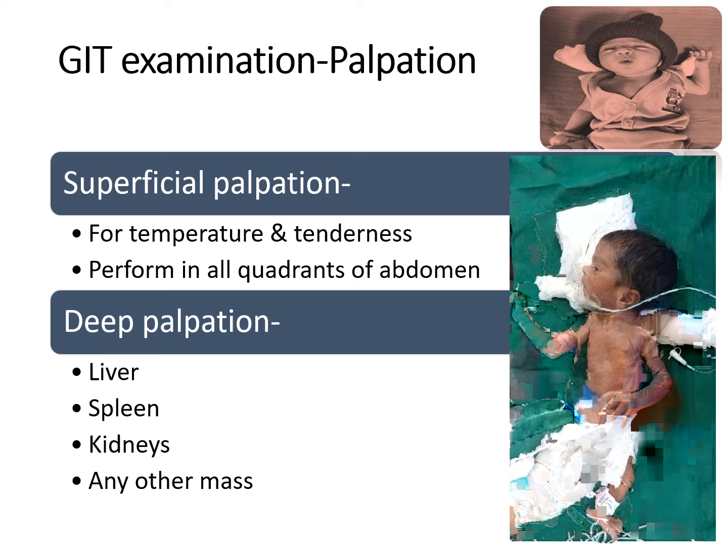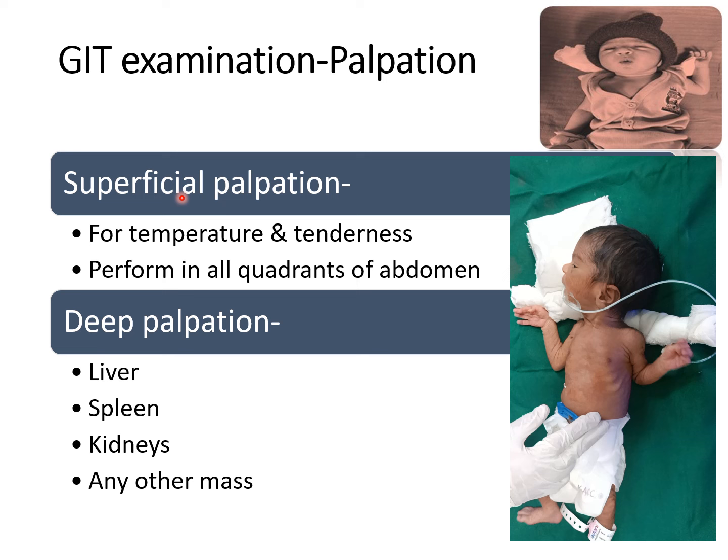After inspection, palpation should be performed — first superficial palpation then deep. In superficial palpation, we should palpate all 9 regions of the abdomen. We should check the temperature with the dorsum of the hand, and for tenderness we should look at the face of the baby. If the baby is crying or changing any facial expression, that means the baby may be having tenderness. We have to mention in which particular quadrant or region of the abdomen the baby is showing a change in facial expression.